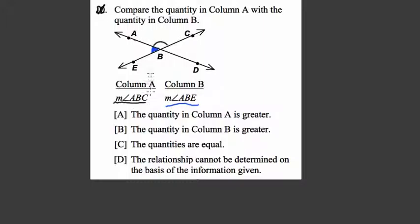Well, they could be equal, sure. The relationship cannot be determined. Here I pick D because although it does look like ABC is larger than ABE, there's no reason they can't be equal. There's no reason that one can't be larger than the other because this diagram might not be accurate or to scale.